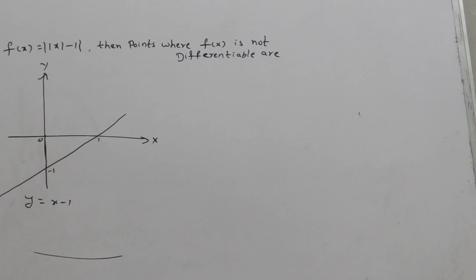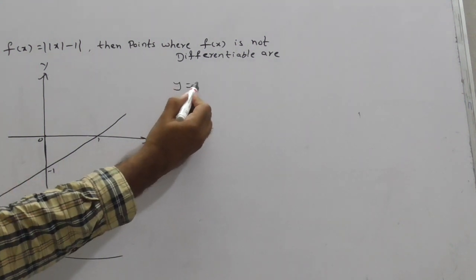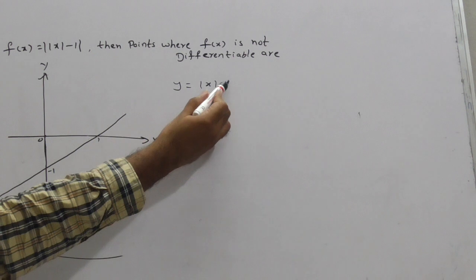Now what is y equal to |x - 1|? Just observe, by using this basic graph, I am drawing y equals |x - 1|.